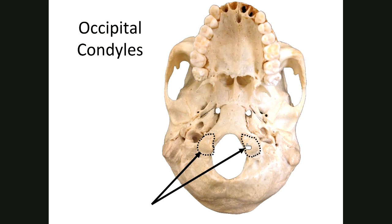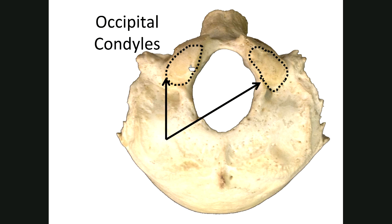On either side of the foramen magnum you have the occipital condyles. A condyle is a rounded, smooth projection or process that comes off of a bone. You have two of them, one on each side. The occipital condyles articulate — meaning connect — with the first vertebra in your neck, the atlas. The condyles kind of sit down inside the atlas, which is like a cup.